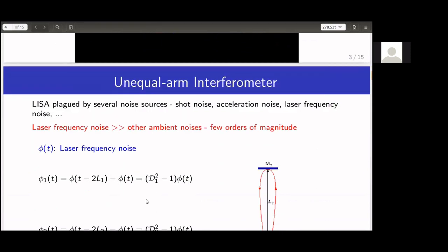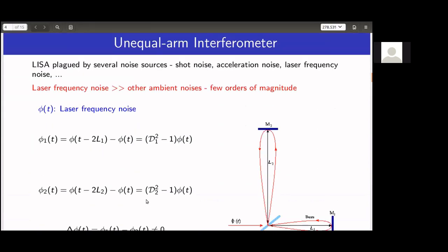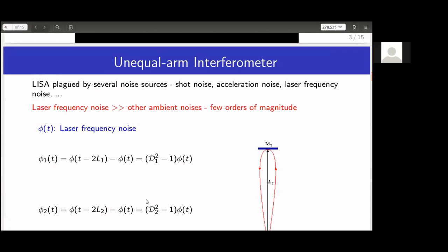The problem is that LISA is an unequal arm interferometer. This is where Hilbert's mathematics is needed. Unlike ground-based detectors where arms can be made as equal as possible — so laser frequency noise, being common to both arms, cancels out — in space-based detectors this is not possible because you cannot make the arms equal.